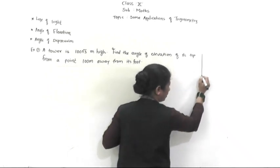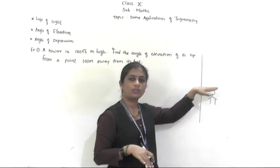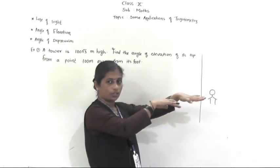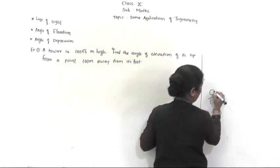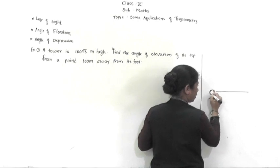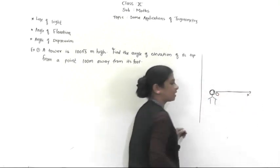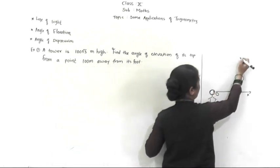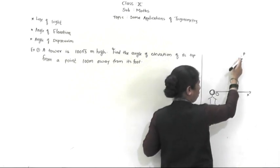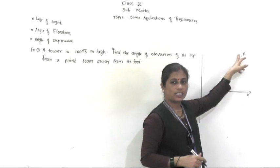Suppose a person is standing here. If I am standing here, I will first look to the front — to the horizontal line. So this is the horizontal line, this is the observer at point O, and OX is the horizontal line. An object is placed at point P. To see this object at point P, how many degrees of eye movement does the observer have to make?